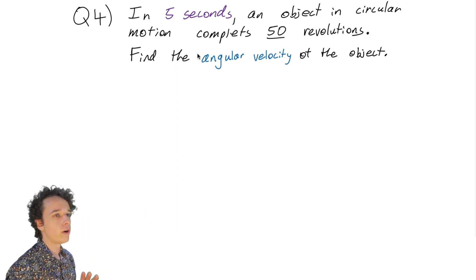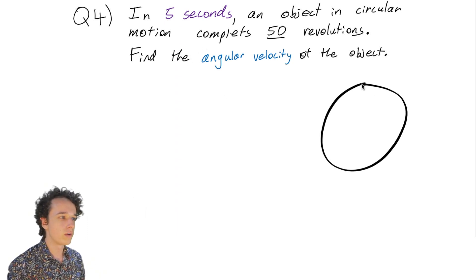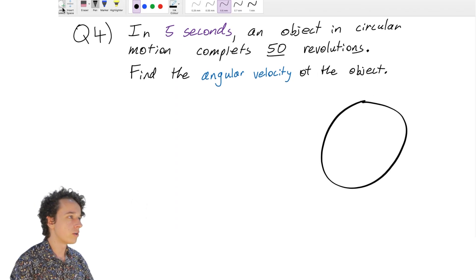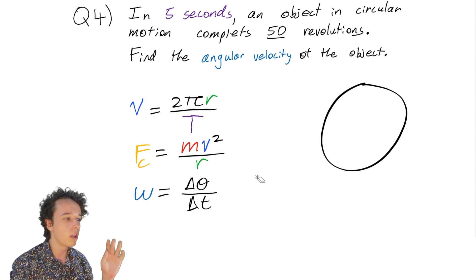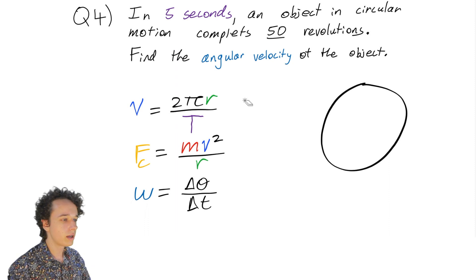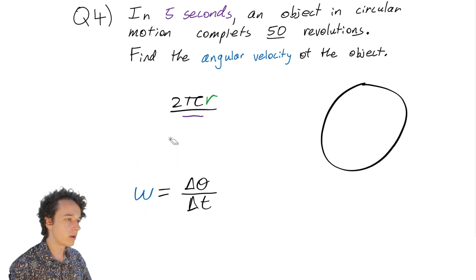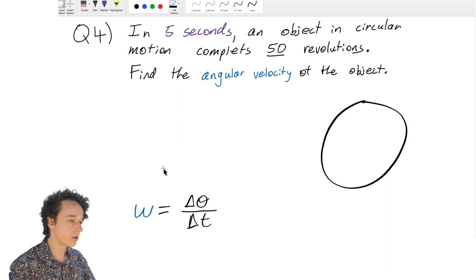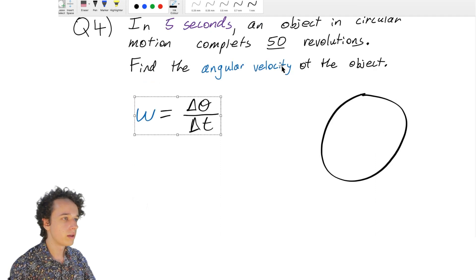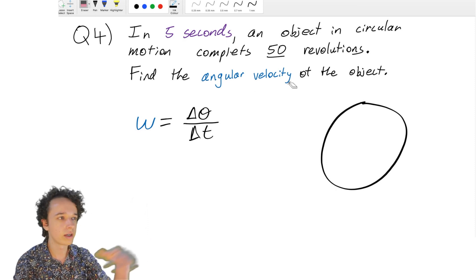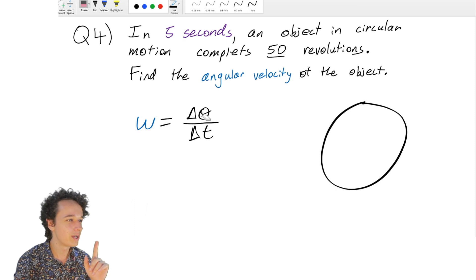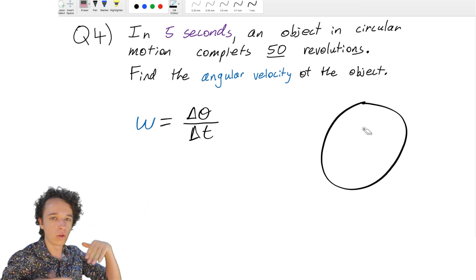Question 4: In 5 seconds, an object in circular motion completes 50 revolutions. Find the angular velocity of the object. We'll use the third equation since it's the only one incorporating angular velocity, and we have enough information to answer with just that equation. We need to convert 50 revolutions into a change in angle.